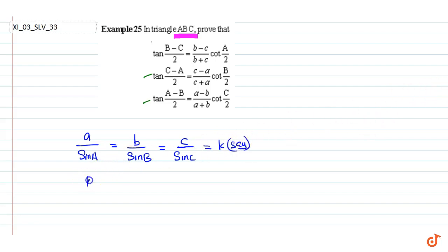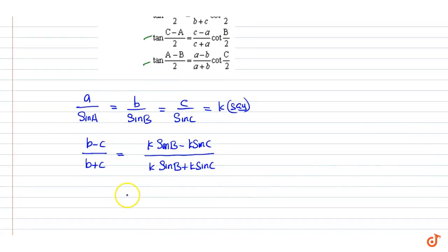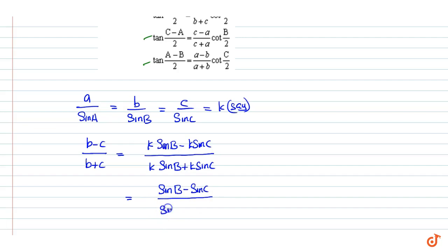Then, (b minus c) divided by (b plus c) is equal to (K sin B minus K sin C) divided by (K sin B plus K sin C). Cancelling K, we get (sin B minus sin C) divided by (sin B plus sin C).